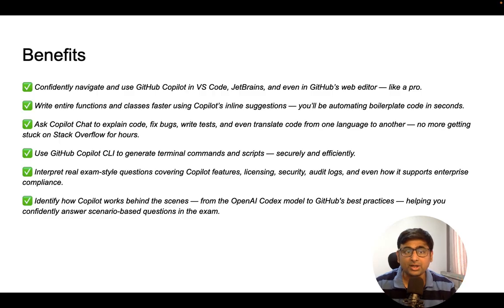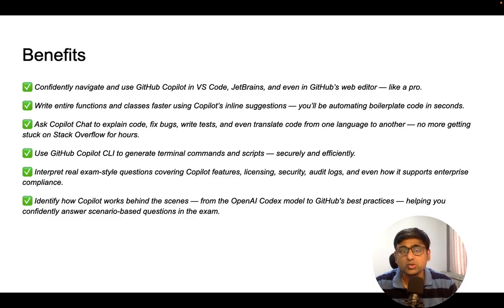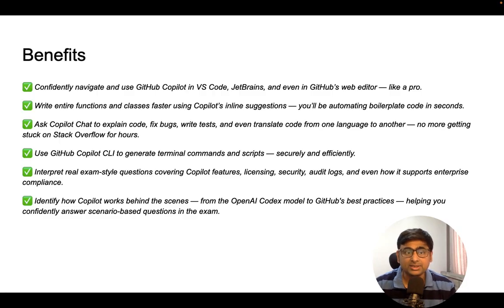To further increase productivity, instead of searching on Google or Stack Overflow for hours, you can get answers in seconds using the GitHub Copilot prompt. You can also use command mode — for example, writing Python or improving SQL code, or writing PowerShell scripts. All of this effort can be saved using the GitHub Copilot CLI, which is the command-line mode.